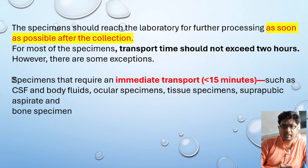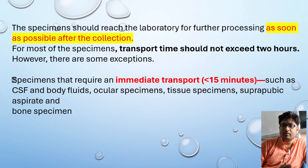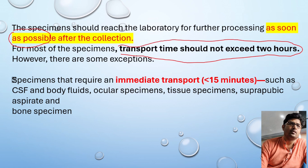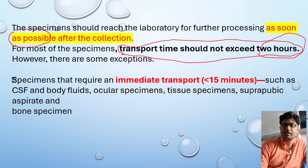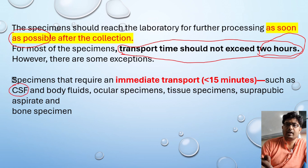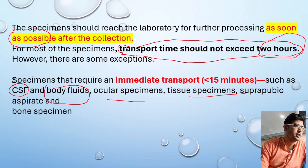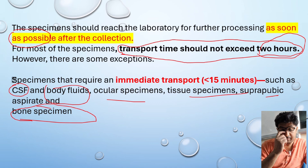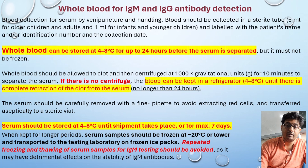The basic criteria is to transport samples from the patient to the lab as soon as possible. Transport time should not exceed two hours for most samples. However, some specimens must be transported within 15 minutes: CSF (cerebrospinal fluid), body fluids, ocular specimens, tissue specimens, suprapubic aspirates, and bone specimens. These need to reach the lab for processing as quickly as possible.